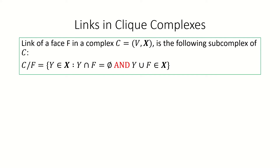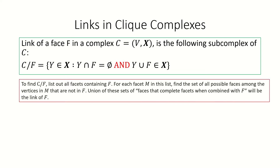Next, let's examine the concept of a link in a clique complex. To review, a link of a face F in the complex C is the subcomplex whose faces satisfy two properties: their intersection with F must be empty, and their union with F must be another face in the complex. In a previous video, we talked about one way to find the link of a face: for each facet M that contains our face F, find the set of vertices that when added to F give us M, and then find the set of all faces involving just those vertices.